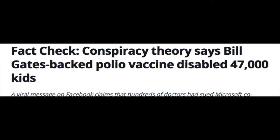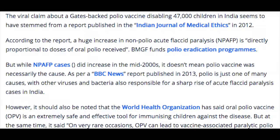There was a polio outbreak in India after the Bill and Melinda Gates Foundation tried to develop a new vaccine for polio. It allegedly started a huge outbreak of a never-before-seen new strain of polio, reportedly caused by the Foundation's medical work, and it's being tried in the Indian Supreme Court.